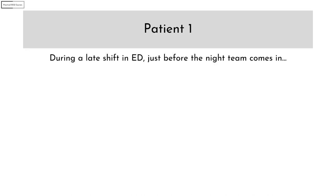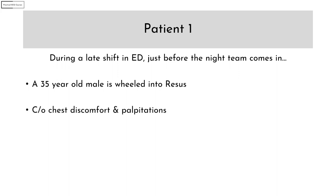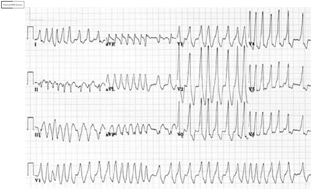This was the scenario for the first patient. During a late shift in ED, just before the night team comes in, a 35-year-old male is wheeled into recess complaining of chest discomfort and palpitations. He is hemodynamically stable. This is an ECG I have taken off the internet, very similar to the original ECG. Pause the video, take a good look at the ECG and come to your diagnosis. Also decide how you are going to treat the patient.